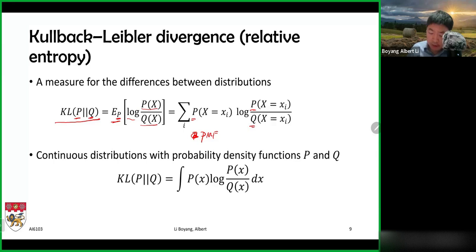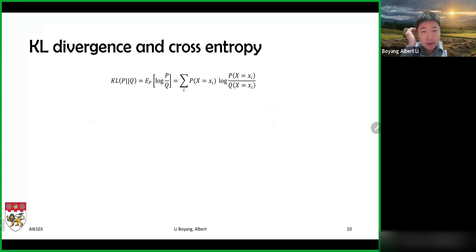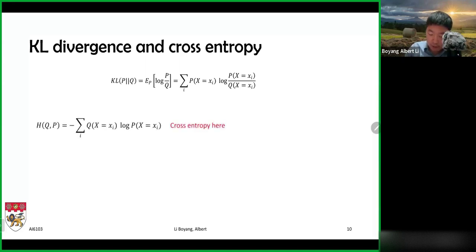That's the definition for the KL divergence. It turns out the KL divergence, as a measure of distance between two distributions, has a close relation with cross entropy. The cross entropy definition is: the expectation under q of negative log p. So this is negative log p under distribution q.